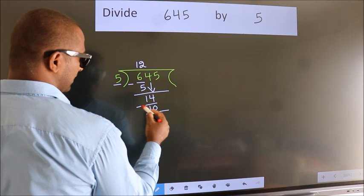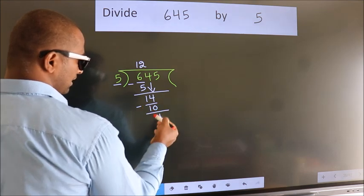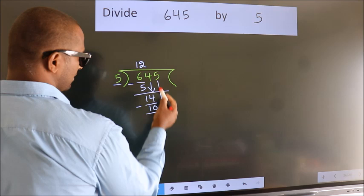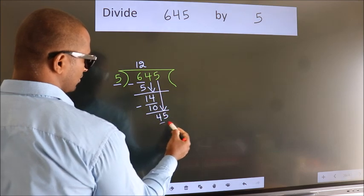Now, we subtract. We get 4. After this, bring down the beside number. So, 5 down. So, 45.